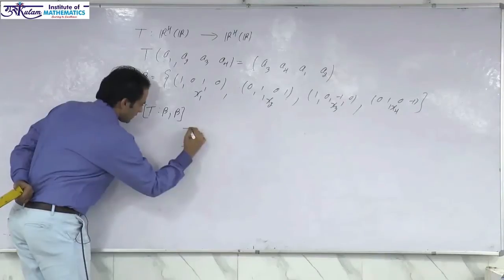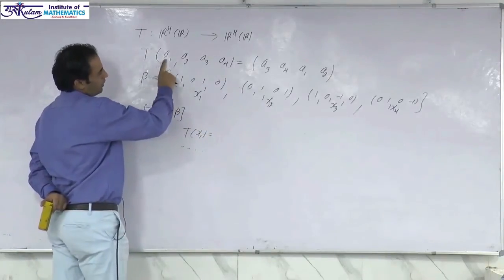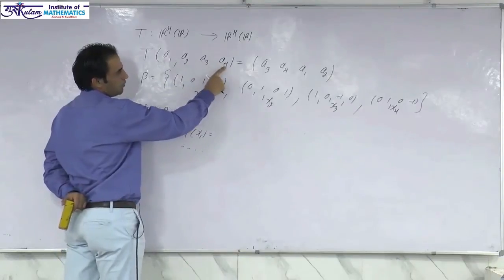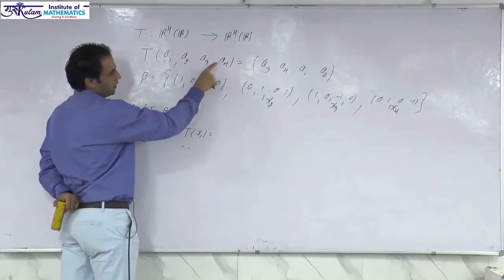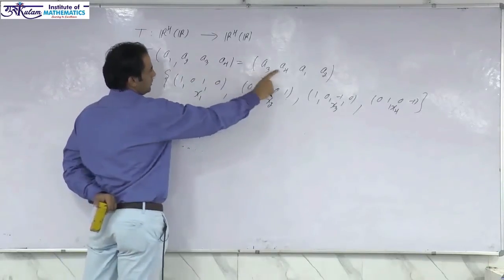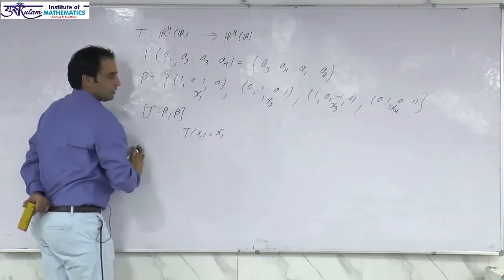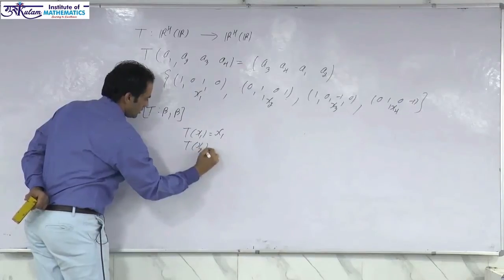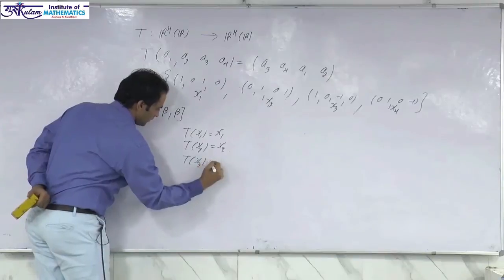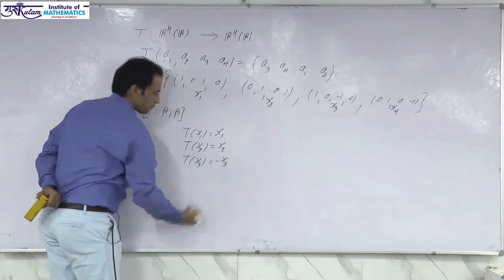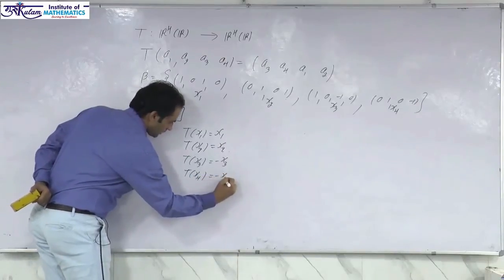You can easily check: T(x₁) — for x₁ = (1, 0, 1, 0), a₁=1, a₂=0, a₃=1, a₄=0 — so the image is (1, 0, 1, 0), which is x₁ itself; x₁ is self-imaged. Similarly, T(x₂) is self-imaged. T(x₃) is simply minus x₃, and T(x₄) is simply minus x₄.